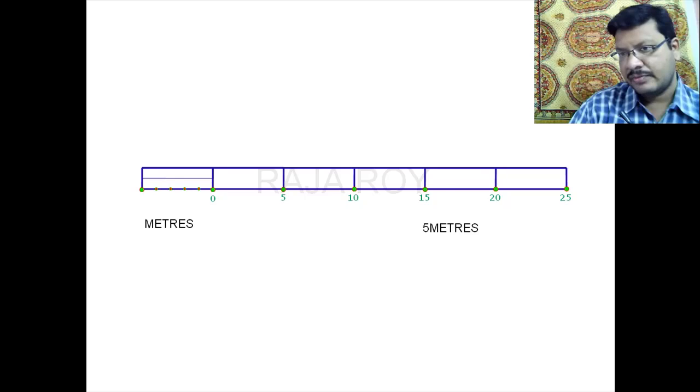This I am dividing into 5 parts. Each part is 1 meter now, so total is 5. If I divide it into 5 parts each will become 1 meter: 1 meter, 2 meters, 3 meters, 4 meters and 5 meters.